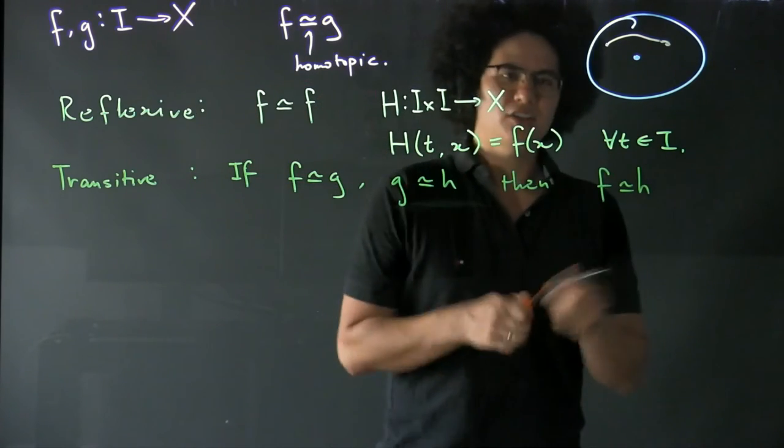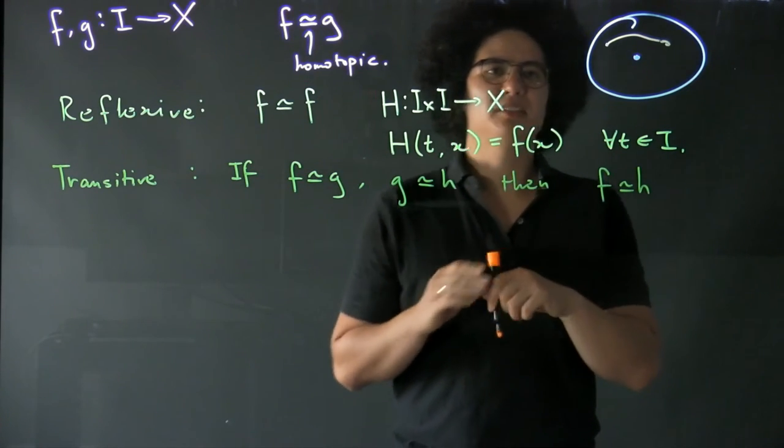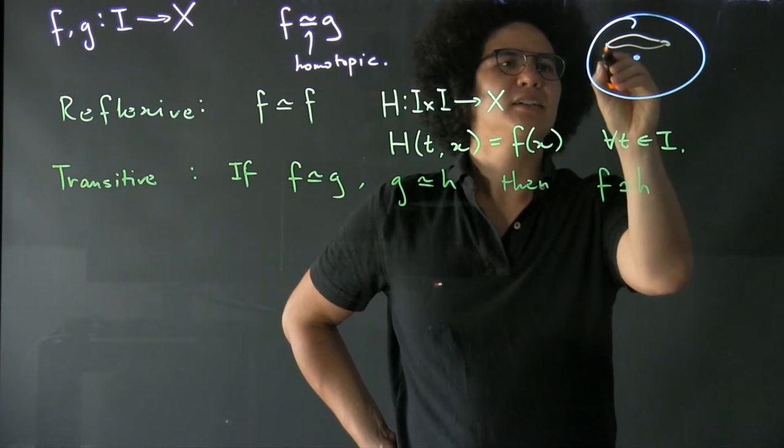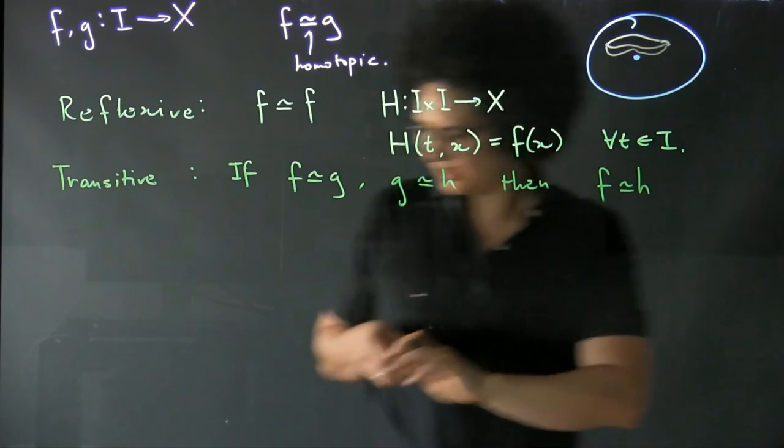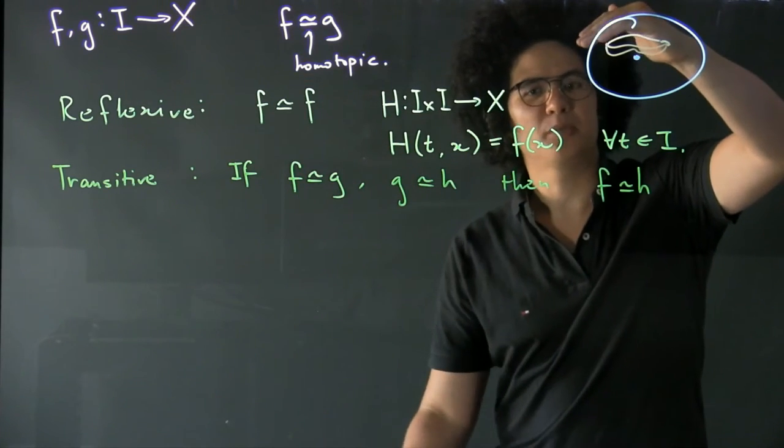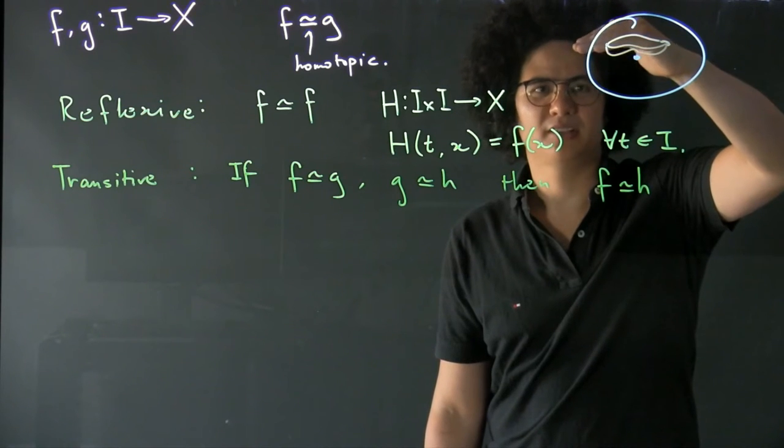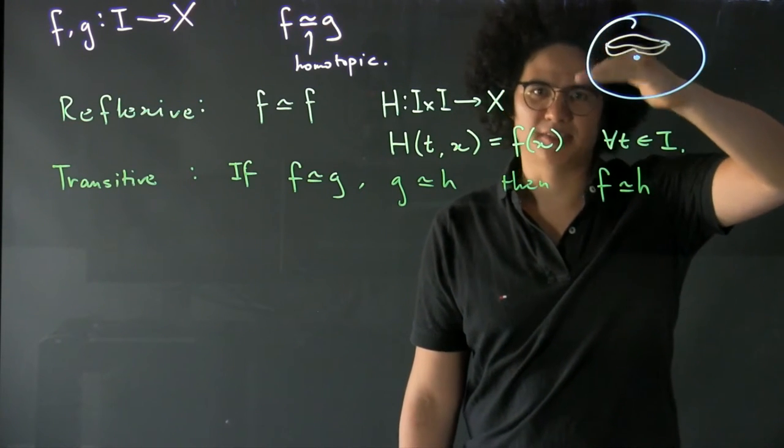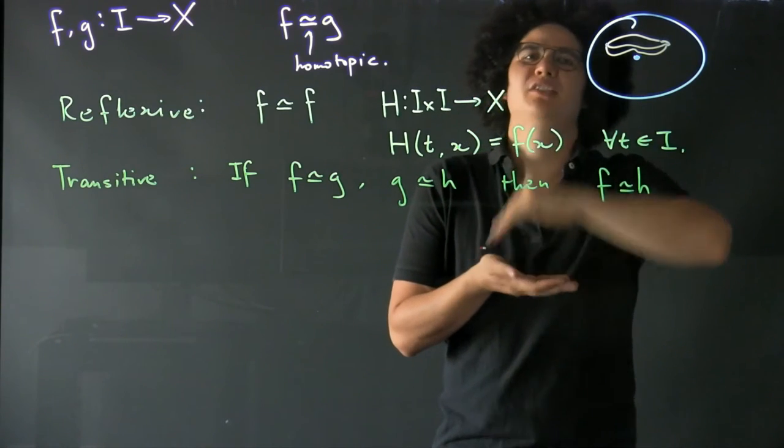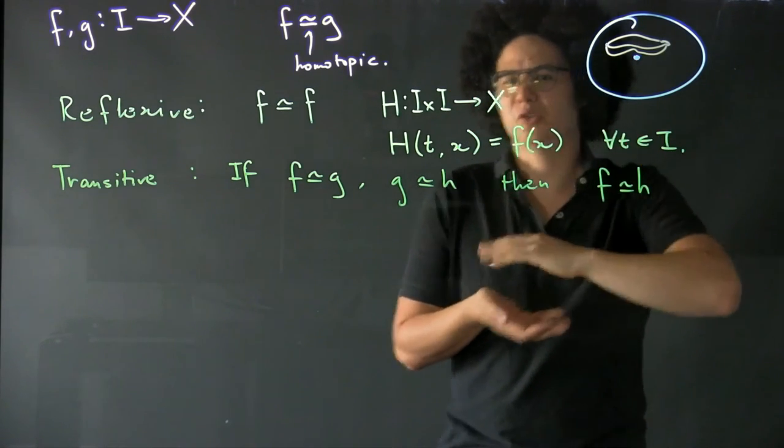And so the way that you should think intuitively about this is that if I put another path here and then another path here, and then I said I could continuously deform the top one into the middle one and then I could continuously deform the middle one into the bottom one, then I just take those two deformations and do one after the other to deform the top one into the bottom one.